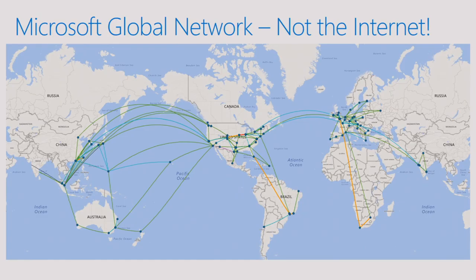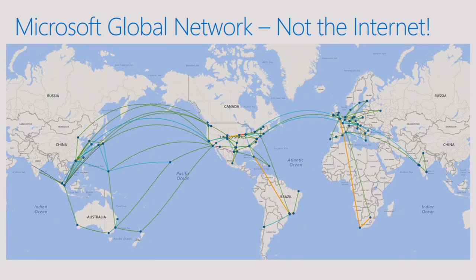This is the thing we don't talk about a lot: Microsoft's global network. When I talk to customers, they have worries and concerns about connecting over the internet, which is a valid concern. Microsoft has one of the top three networks in the world in terms of traffic. We handle something like one and a half million network requests per second on this network. That whole network is designed to get your traffic from your clients and services into Microsoft's data centers and back again in a performant amount of time. All of these dots represent locations where Microsoft has peering — where we work with ISPs to grab that traffic and take it onto our network.